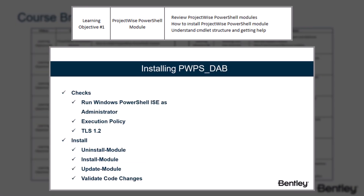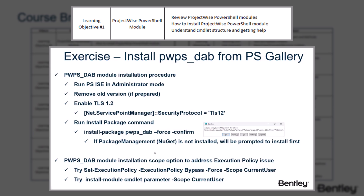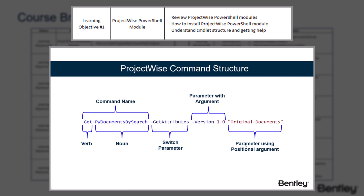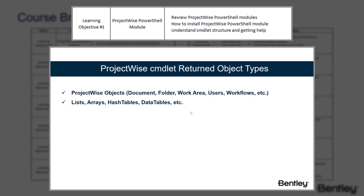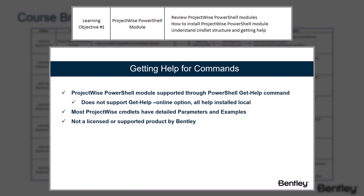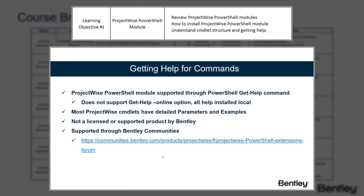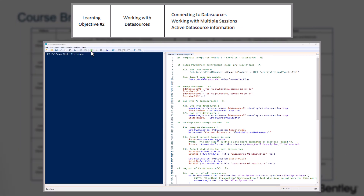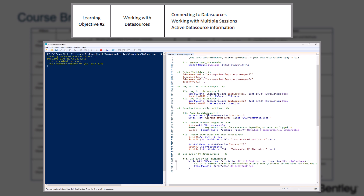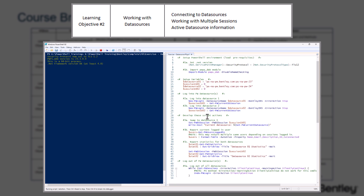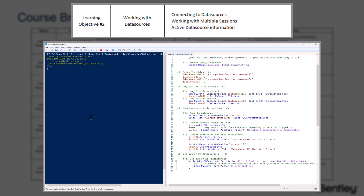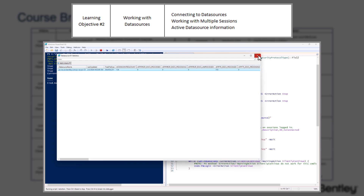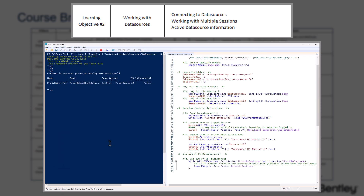Objective 1 will cover the ProjectWise PowerShell module, understanding the module, how to install it, and understanding commandlet structure and getting help. Learning Objective 2 is working with data sources, connecting to data sources, working with multiple sessions, and getting data source information.